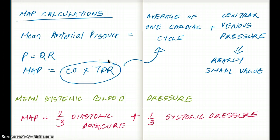The average of the arterial pressure can be determined by the average of one cardiac cycle and the central venous pressure. These two together make the mean arterial pressure. How do we calculate one average cardiac cycle?